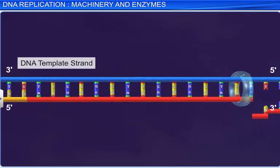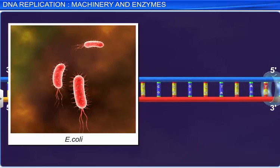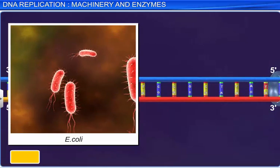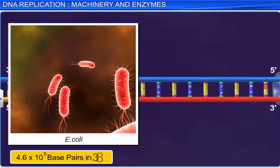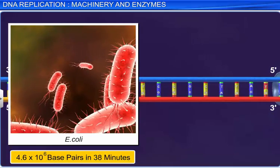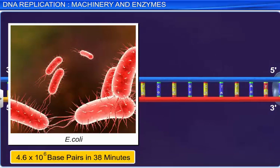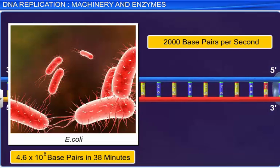For instance, E. coli can replicate 4.6 × 10⁶ base pairs of diploid content in 38 minutes. That is, the average rate of polymerization is 2000 base pairs per second.